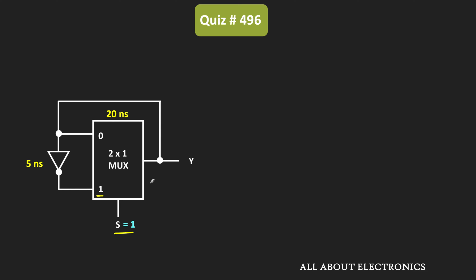Let's say initially this output Y is equal to 0. The same 0 will also appear at the feedback path, and after the propagation delay of 5 nanoseconds it will become logic 1 at input number 1. Then after the propagation delay of 20 nanoseconds, that same 1 will be available at the output side. So in the timing diagram, if Y starts at 0, it will become 1 after 25 nanoseconds.